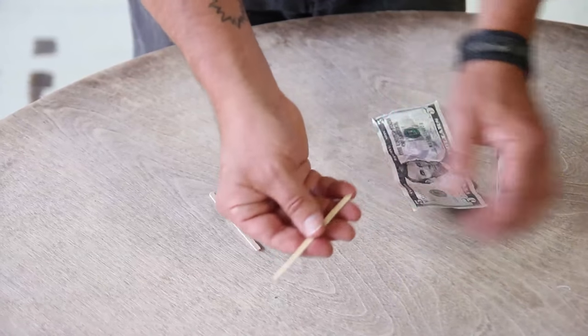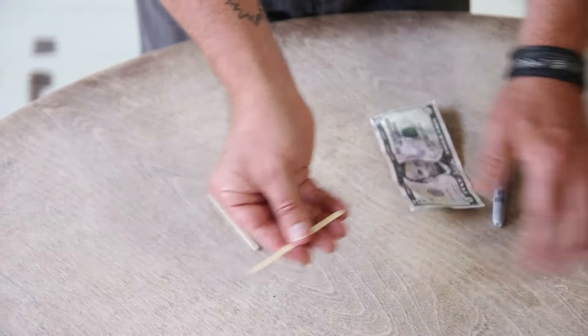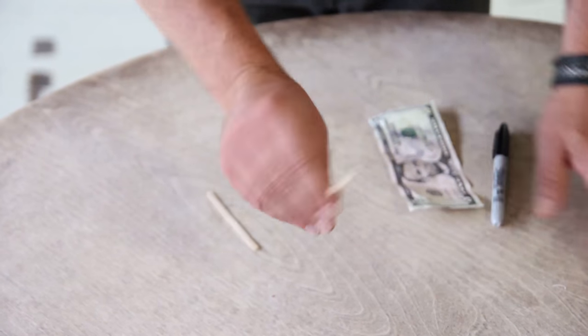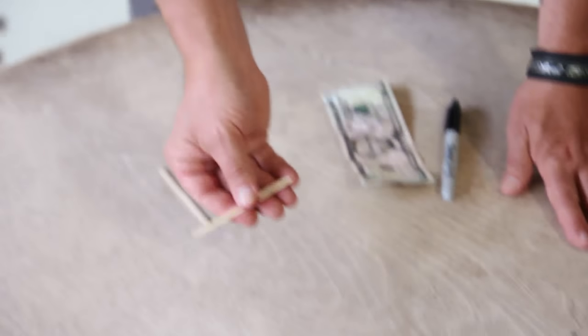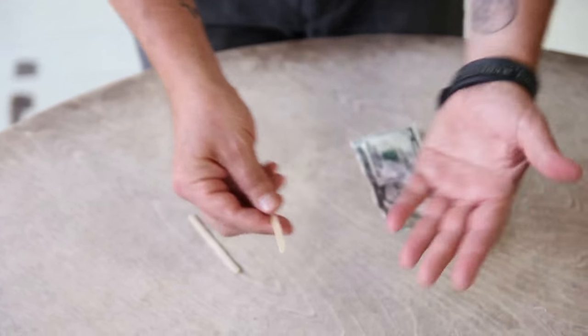And this is where, if you want, you can casually flash both sides and show, well, look, we'll put this. And you don't say, look, it's unmarked. Look, there's no X on there. You don't talk. You just sort of say, okay, well, take this piece and we'll put it in your hand.